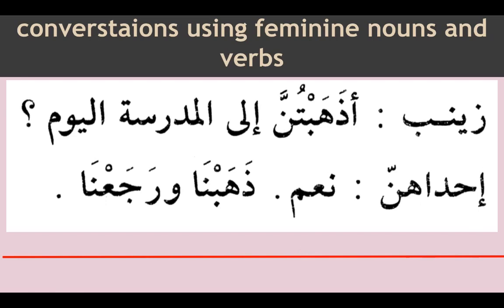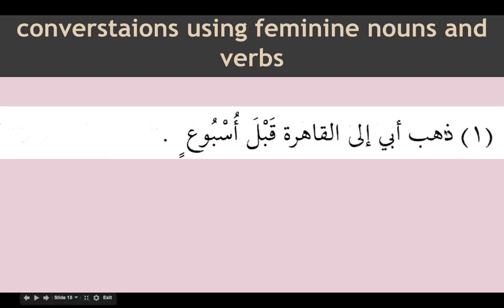Now let us refresh ourselves with masculine verbs and identify the fa'il and fi'l. Example: zahaba abi ilal qahirah qabla usbuin — my father went to Cairo, the capital of Egypt, one week before. Zahaba is the fi'l, we look for fa'il with the sign of marfu. Abi is a compound: abu plus ya mutakallim. Abu huwa would be marfu, but with ya it becomes abi. Abu is fa'il — mudaf, ya mutakallim is mudaf ilaihi.